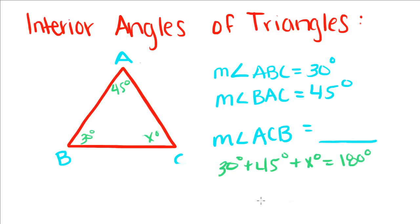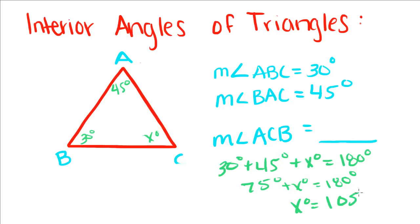We're going to add all of these together with x and set it equal to 180 degrees. If you add those up, you get 75, and if you subtract them over, you get x equals 105 degrees. So the angle of ACB is 105 degrees.